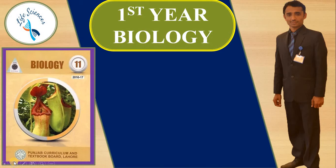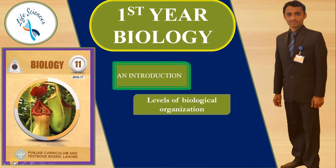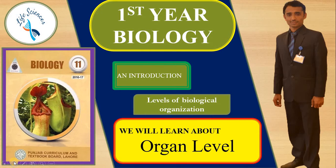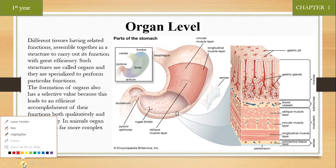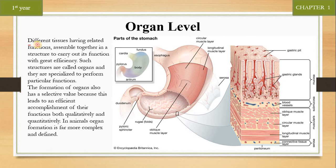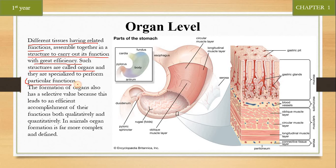Assalamu alaikum dear students, welcome to the life sciences. We are studying first year biology, chapter one: introduction. We are studying the organ level of biological organization. When different tissues having related functions are assembled together in a structure to carry out its function with great efficiency, such structures are called organs. They are specialized to perform a particular function.